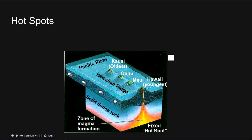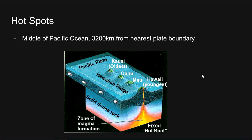Hotspots — an example is the Hawaiian Islands. These are formed in the middle of the Pacific Ocean, 3,200 kilometres from the nearest plate boundary. A constant source of magma from the hotspot partially melts the overriding Pacific Plate. The magma, which is lighter than surrounding solid rock, rises through the mantle and crust to erupt onto the sea floor. The continuous eruptions cause the volcano to grow until it eventually emerges from the sea to become an island.